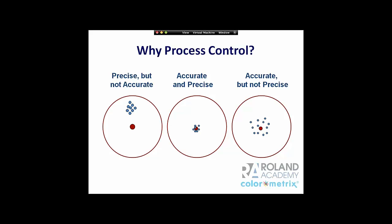Why do we engage in process control? Think of it as a bullseye with a bow and arrow. The ultimate goal is to be both accurate and precise. Thinking about brand colors for a soft drink manufacturer with a particular red, they're most satisfied when you are both accurate and precise. But there are other states — precise but not accurate means you're hitting a very tight cluster repeatedly but it's far from the desired color. Accurate but not precise means you're close to the brand color but not consistently hitting it.